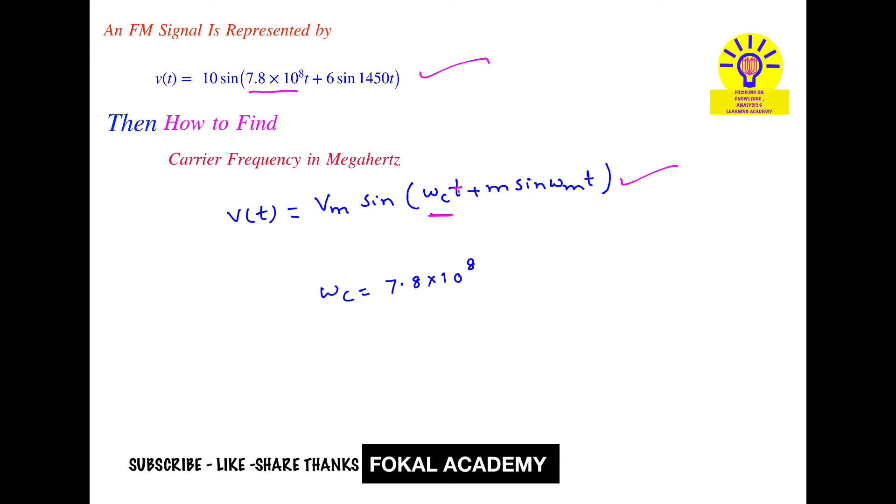But here we want carrier frequency in megahertz. So ωc can be expressed as 2πfc = 7.8 × 10^8. So from this we get fc = 7.8 × 10^8 / 2π.